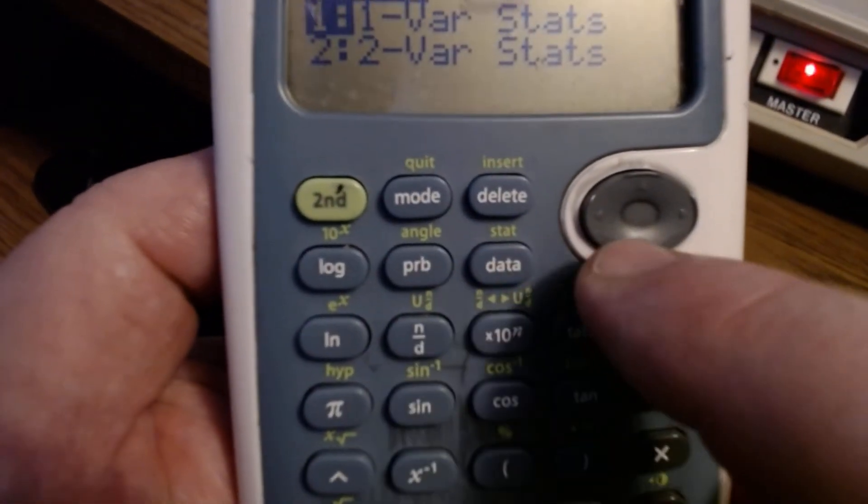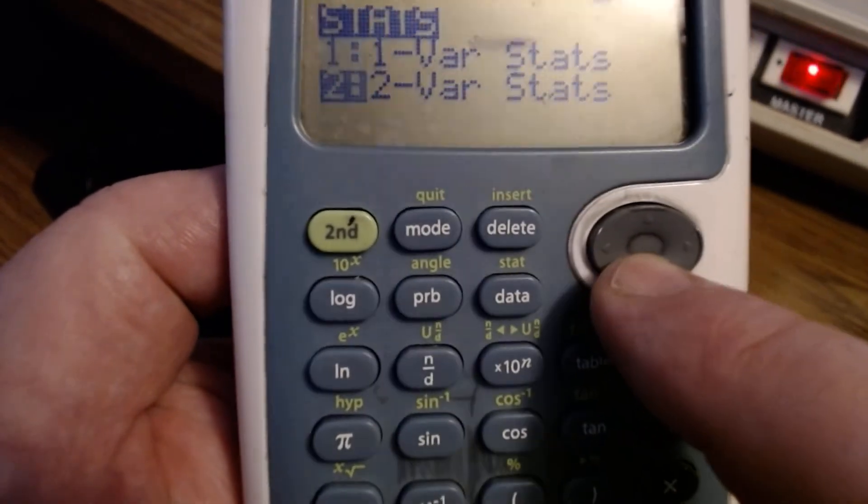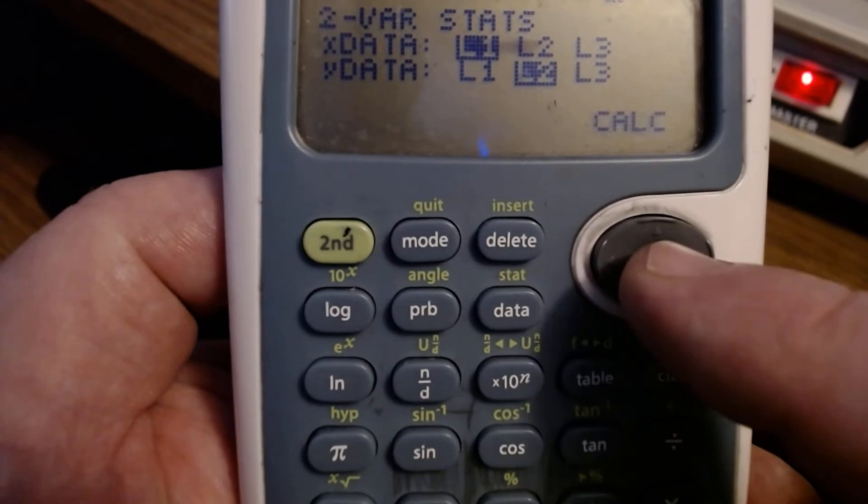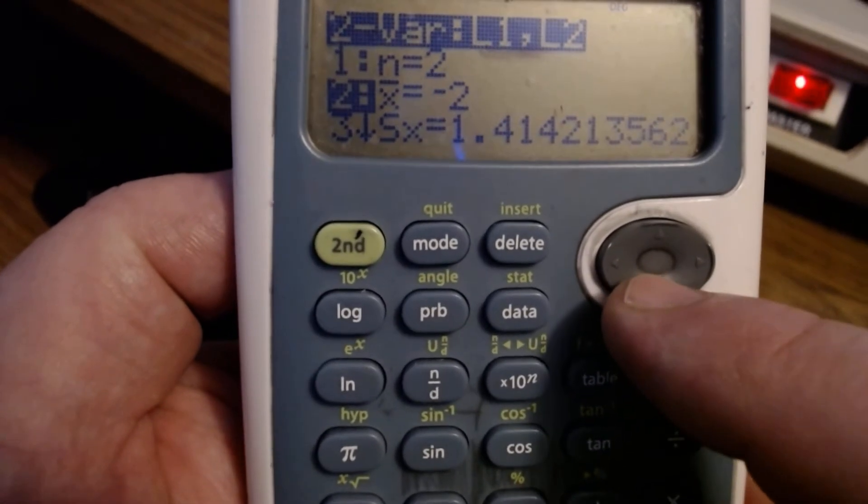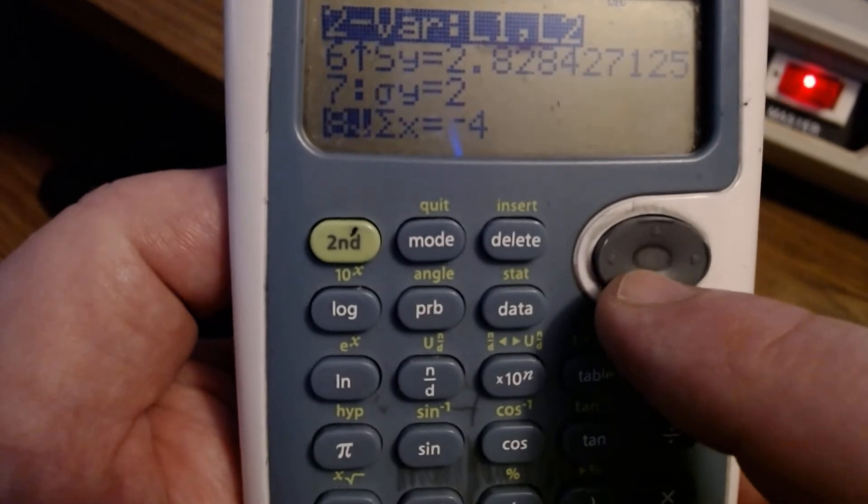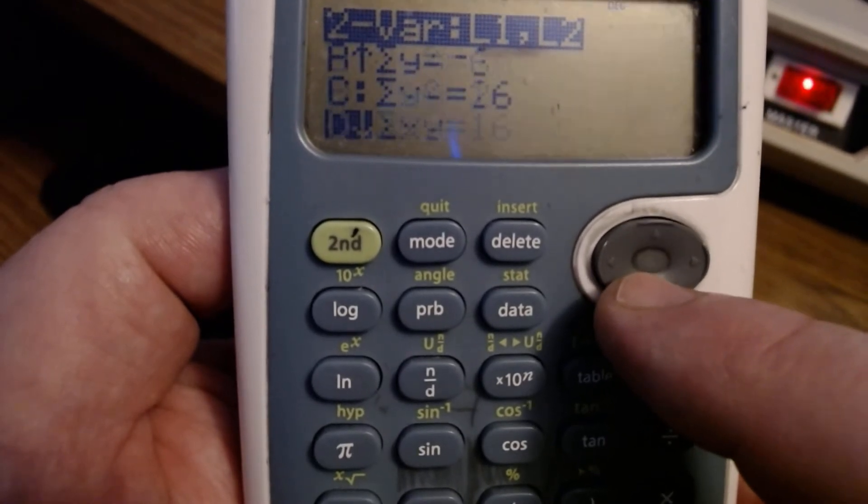Once I'm satisfied my numbers are entered correctly, negative 1, negative 1, and negative 3, negative 5, I'll go to my home screen by hitting second mode. Then I'll push second data. I'll select 2 var for two variable statistics and hit enter. Then I'll select calc for calculate, hit enter. And it's stored under D and E, where D will be the slope and E will be the y-intercept.